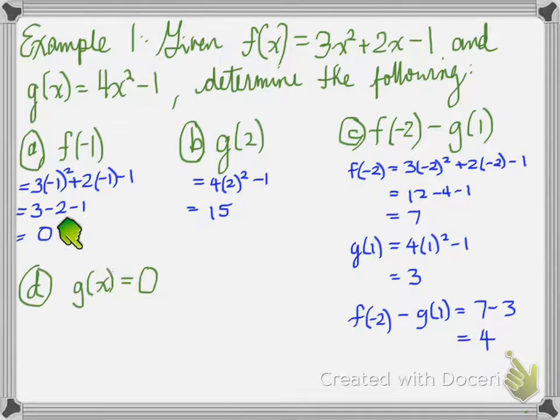The last one. What do you think this is saying? When g of x equals 0. Well, that means that instead of replacing the x, we're replacing the whole g of x with the value 0. So 0 equals the equation for g of x, and 0 is equal to 4x squared minus 1.